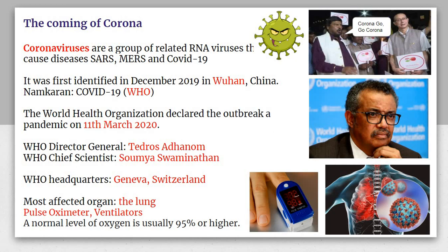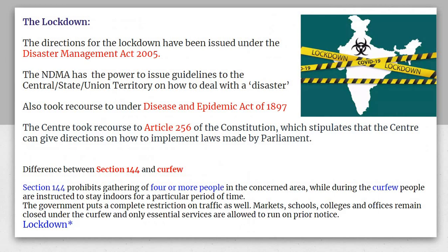A normal level of oxygen is usually 95% or higher. If the pulse oximeter shows 95% or a higher reading, you are okay; otherwise you are not. When the oxygen level drops, a device is applied that supplies higher oxygen to the patient.